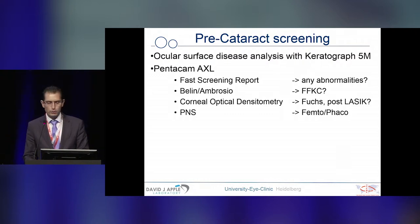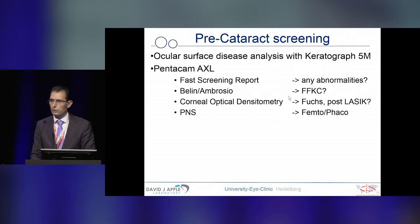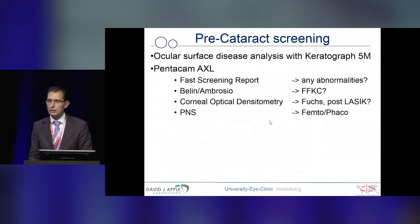Before making measurements with the Pentacam AXL, we use a fast screening report to identify any abnormalities of the anterior and posterior segment of the eye. The Belin-Ambrósio calculation is used to exclude keratoconic changes, corneal optical densitometry to pick out patients with Fuchs dystrophy, and nucleus staging to have an objective measurement of the density of the nucleus.